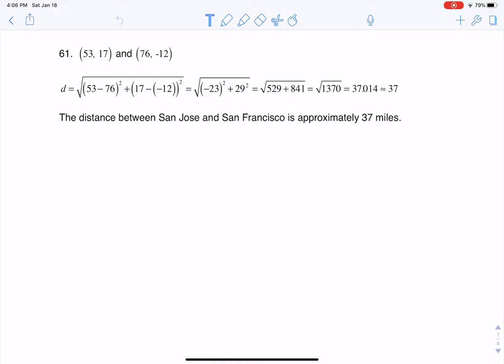To find the San Francisco coordinates, you need to look back at number 60. If you look back at number 60, it tells you that the coordinates on a map for San Francisco are (53, 17). I got this from number 60 in the book.